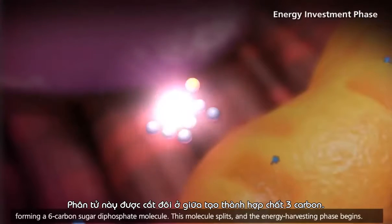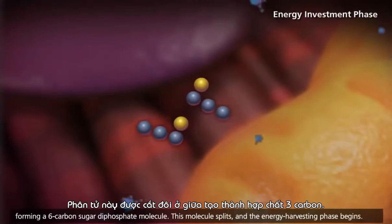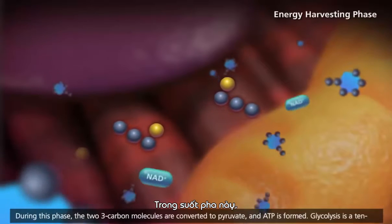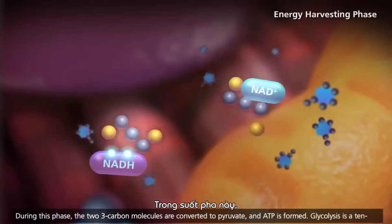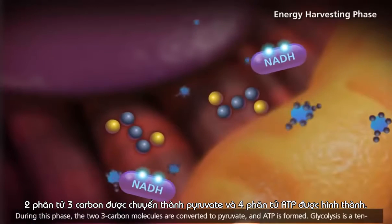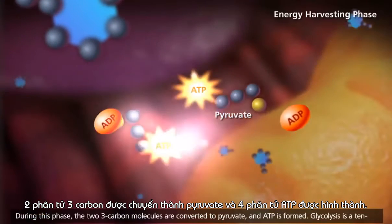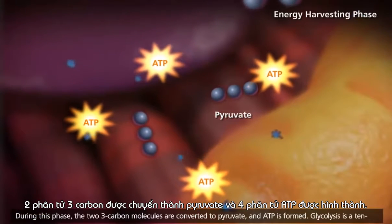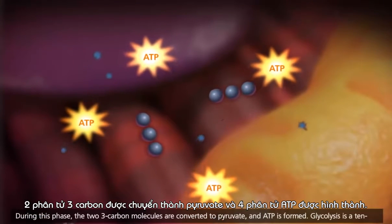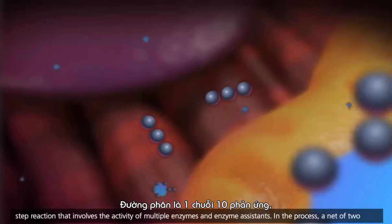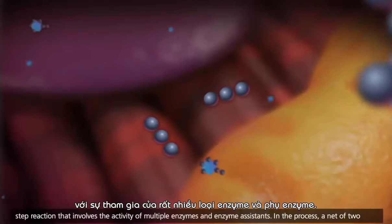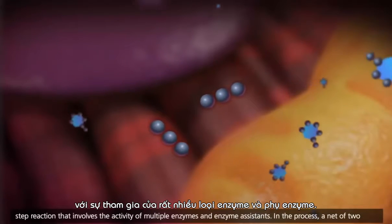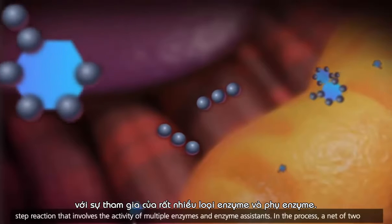This molecule splits, and the energy harvesting phase begins. During this phase, the two three-carbon molecules are converted to pyruvate. Glycolysis is a 10-step reaction that involves the activity of multiple enzymes and enzyme assistance.